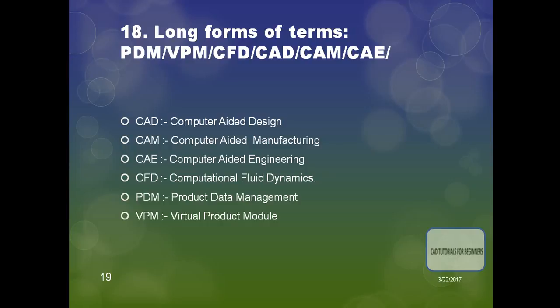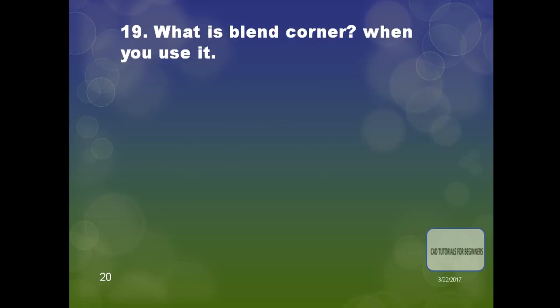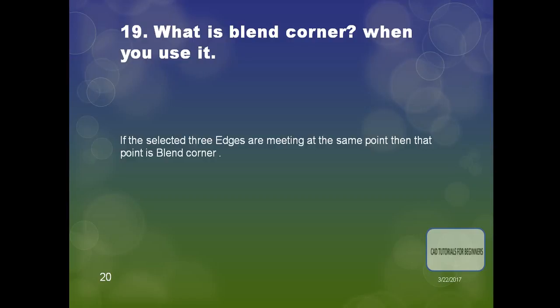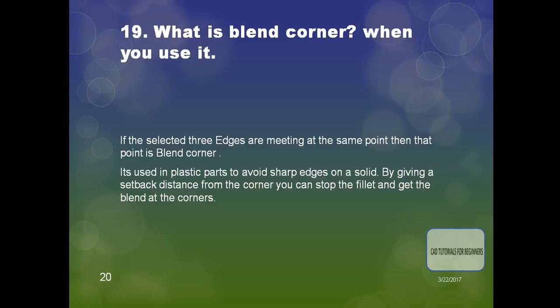The next question is: what is a plane corner and when do you use it? It is used in plastic part design to avoid sharp edges on a solid by giving a setback distance from the corner. You can stop the fillet and get a plane at the corners — for example, you can see a blend corner present at the corner of a feature.